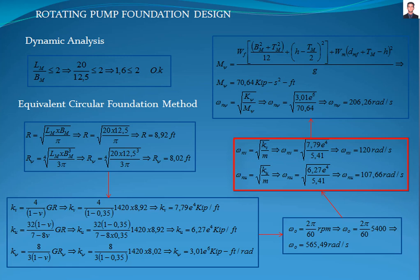The undamped natural frequency for rocking has to be calculated with the rocking moment of inertia, which is calculated with this equation, where H is the center of gravity of the foundation system and g is the acceleration of gravity, giving a result of 17.64 kilopound-square-second-feet. The undamped natural frequency for rocking is 206.26 radians per second.